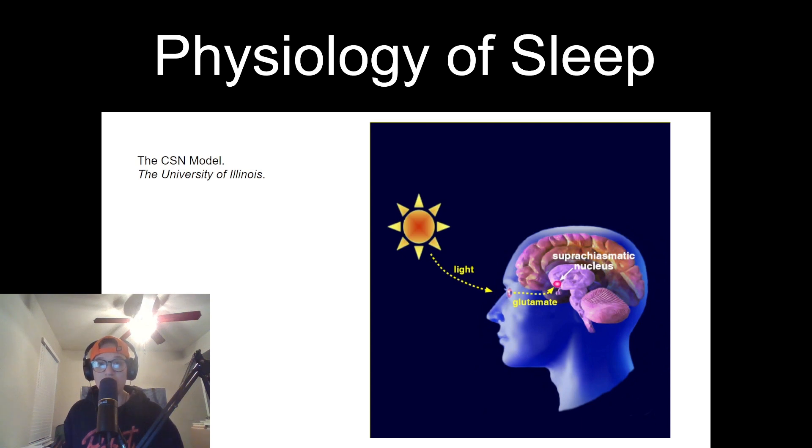Sleep is not a uniform process, but rather consists of cycles that repeat throughout the night. Each sleep cycle typically lasts around 90 minutes and consists of non-REM and REM sleep in a specific sequence. In the earlier parts of the night, non-REM sleep dominates, while REM sleep becomes most prominent as the night progresses. And by the way, for those of you who don't know, REM or non-REM sleep stands for non-rapid eye movement, or in the case of REM, rapid eye movement.